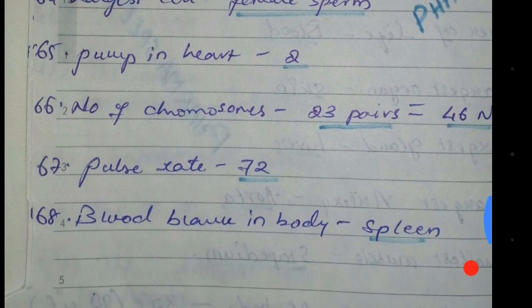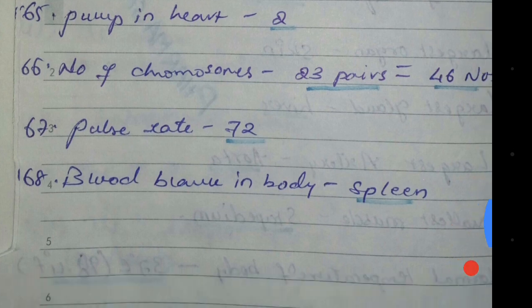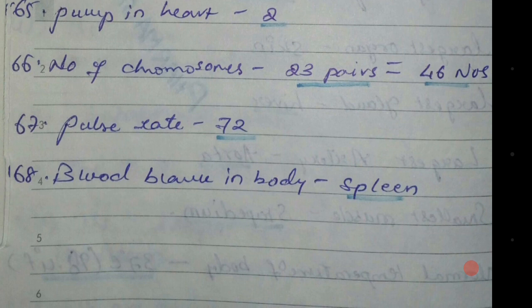Pump in the heart: in the heart there are two pumps — one is the systolic pump and one is the diastolic pump. This is how BP and blood pressure are measured. Number of chromosomes in our body: there are 23 pairs of chromosomes, which equals 46 in number.